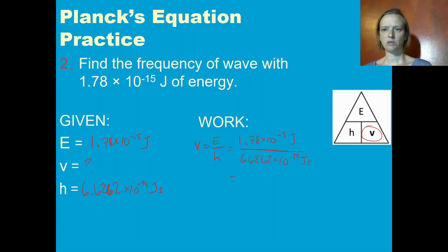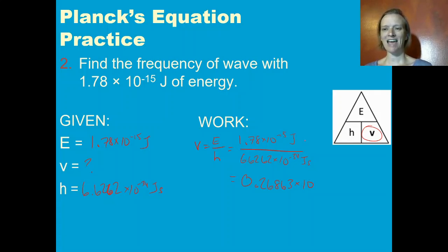I like to do the division first, so I get 0.26863 times 10 to the 19th hertz — since negative 15 minus negative 34 is really like adding 34, giving 10 to the 19th hertz.